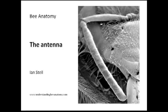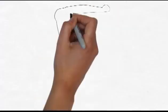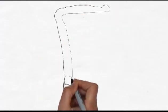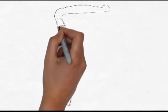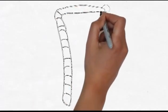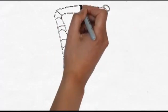The antenna is the universal sensory organ of the insect world and the bee is no exception. Its antennae are in constant use exploring the environment using touch,